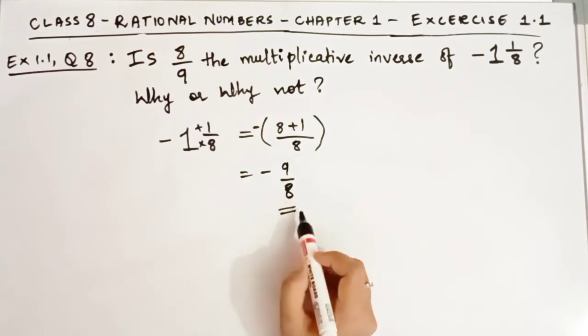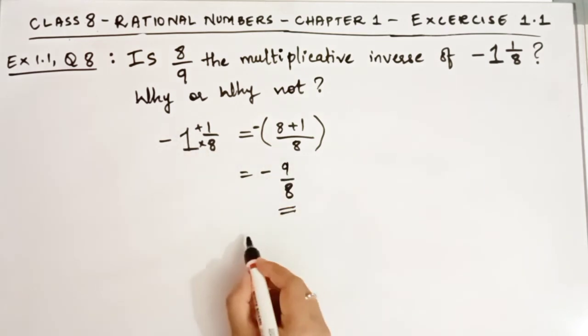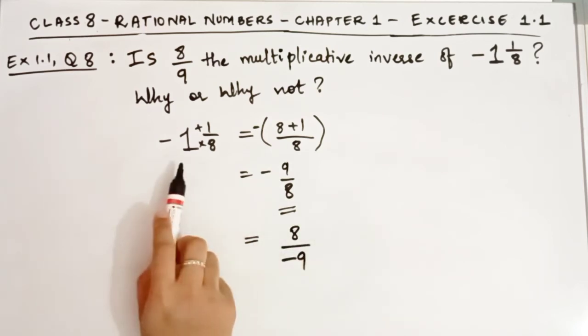What is the multiplicative inverse of this number? It is -8/9. So this is the multiplicative inverse.